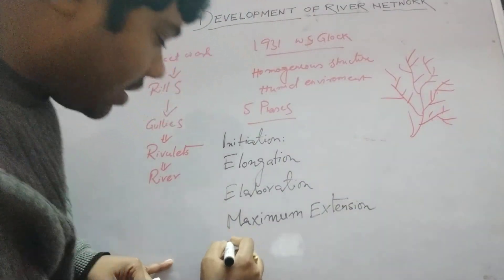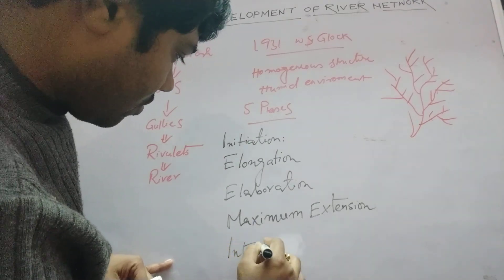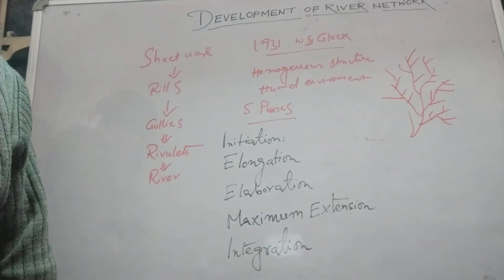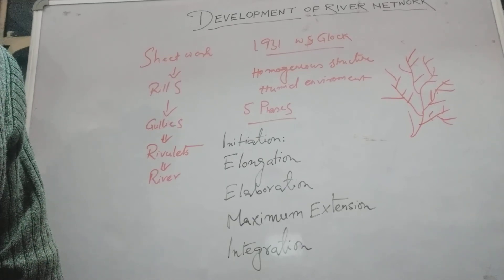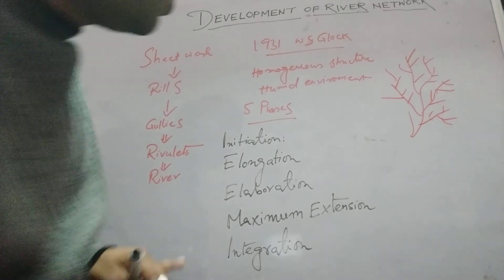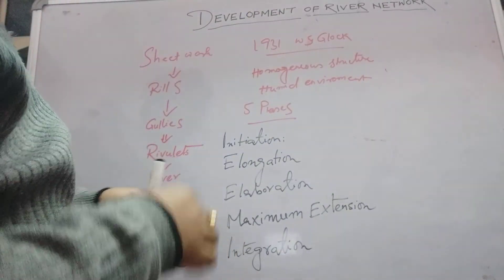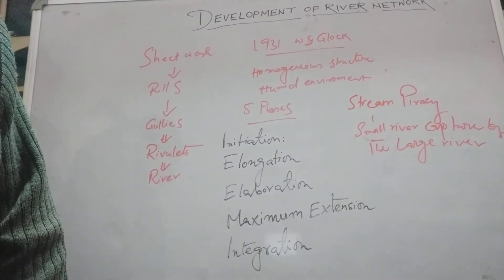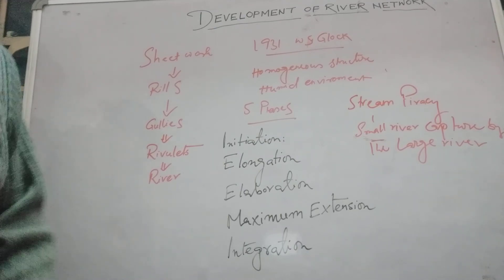The last phase is known as integration. This is the phase where the system undergoes reorganization and the eradication of parts of the network occurs. Some streams are lost through stream piracy — when a small river is captured by a large river. As a result, the number of small streams decreases, the number of big streams increases, and their size also increases.